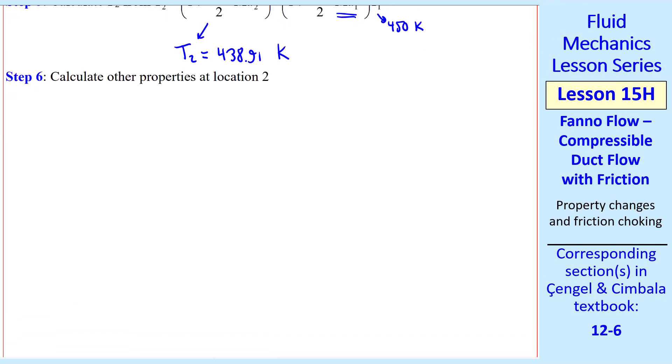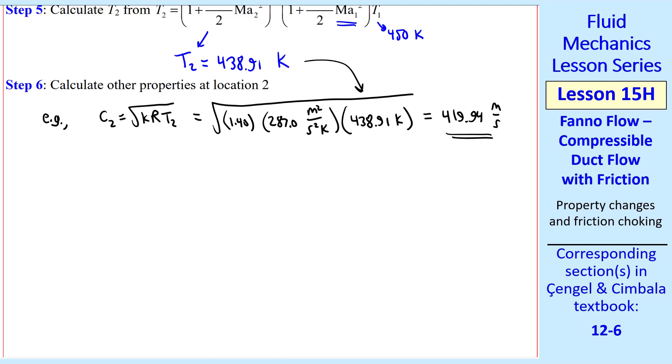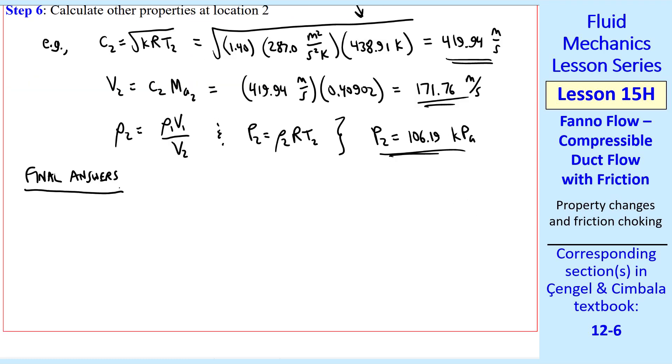Finally, step 6 is to calculate the other properties at location 2. I'll do some quick examples. The speed of sound at location 2 is the square root of k, which is the k for air, r for air, and T2, which we just calculated. I get 419.94 meters per second. Now we can get V2, since we know both C2 and MA2, which gives me 171.76 meters per second. We can calculate density from the conservation of mass equation, since rho 1 V1 is rho 2 V2, where we get P2 from the ideal gas law. From these, I get P2 is 106.19 kPa. The final answers for all the properties that we were asked for, to three significant digits, are T2, P2, V2, and MA2.